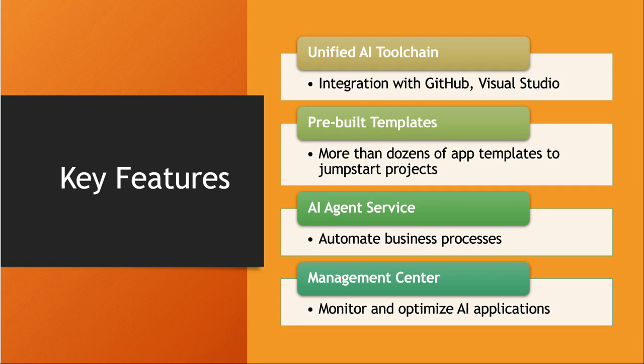The very first key feature is unified AI tooling. This is one of the most standout features of this platform. The toolchain seamlessly integrates familiar tools like GitHub, Visual Studio, and Visual Studio Code — tools we are usually using most of the time when building AI-based applications. This platform integrates those tools and boosts productivity so we can have a smooth development process throughout the entire cycle.